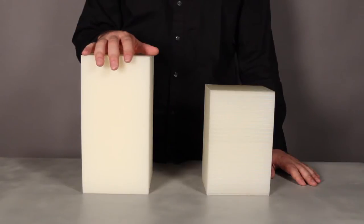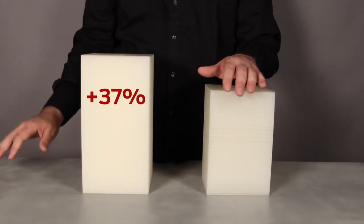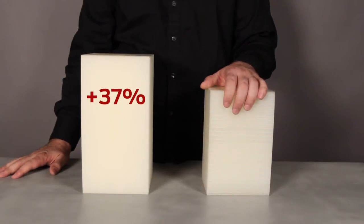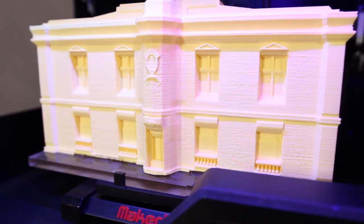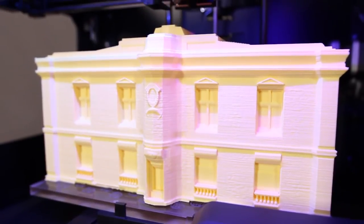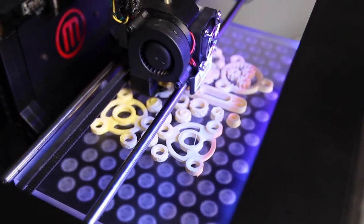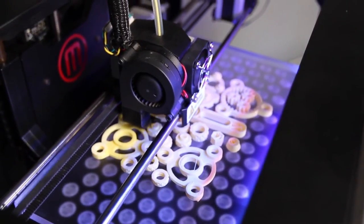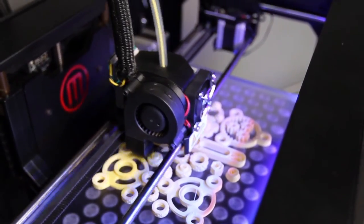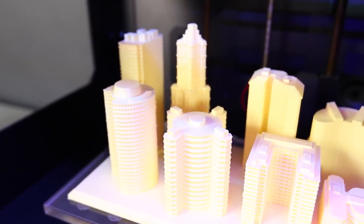The volume of the build area on the MakerBot Replicator 2 desktop 3D printer is over 37% bigger than it was for the original MakerBot Replicator. And that means more space for your ideas. Place an entire project with multiple pieces on one build plate and save yourself time. This is a machine made for multitasking.